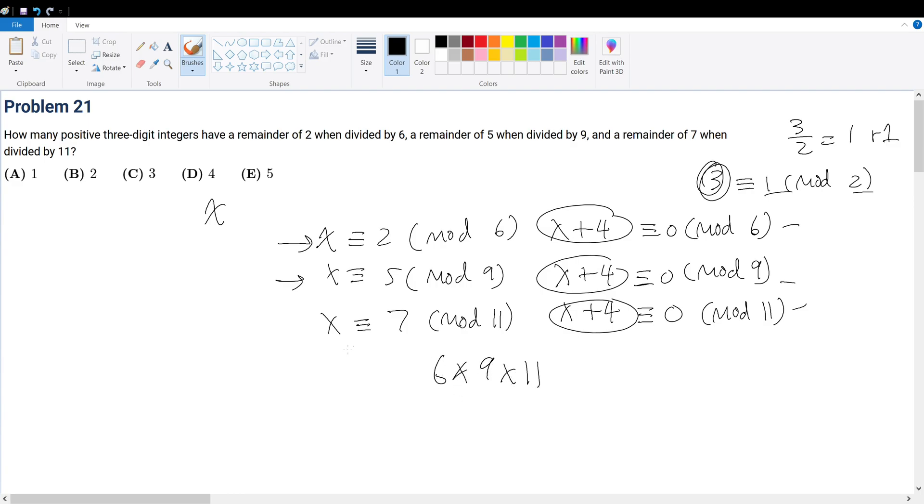So 6 times 9 times 11 gives us what? That gives us 99 times 6, that's 594. But that's too big. Well, that just basically means that we're modding 6, we're modding 9, we're modding 11. So we can just mod out the least common multiple, right?